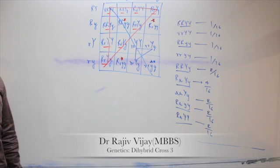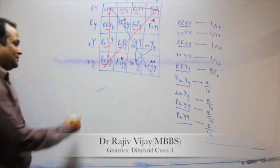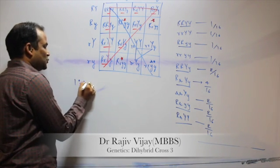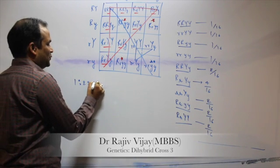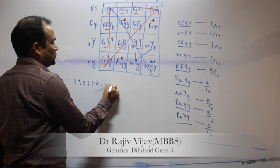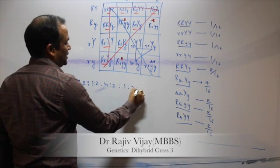If I look at its genotype, how do I see it? 1 is 2, 2 is 2, 1 is 2, 2 is 2, 4 is 2, 2 is 2, 1 is 2, 2 is 2, 1.